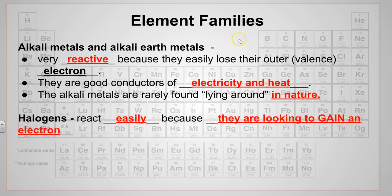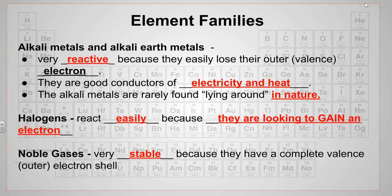The halogens, moving over to the right side of the periodic table, they react also very easily because they're looking to gain an electron. So over here in group number 7 or 17, they react very easily because they want to get an electron. And then finally over in group 18, the very last group on the right-hand side of the periodic table are the noble gases. They're very stable because they have a complete valence outer electron shell. They don't want to take, they don't want to give up, and they don't react very much at all.